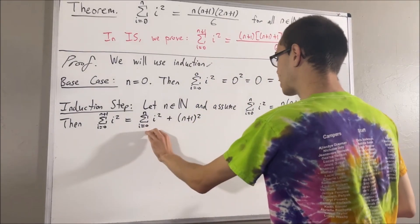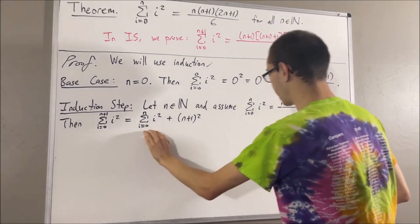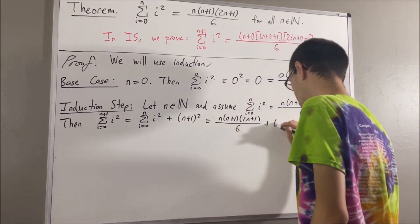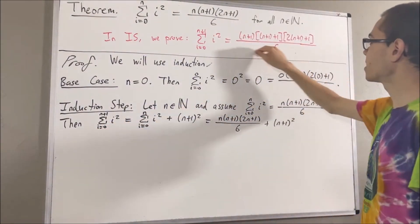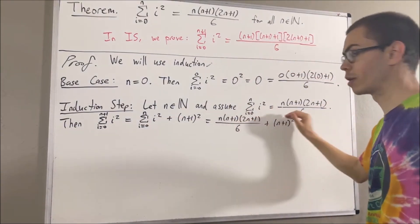But remember, this guy is equal to this. So let's replace this guy with this. Now remember, the whole goal is to show that this guy is equal to this. And this is a single fraction. So maybe we should combine this all into a single fraction.